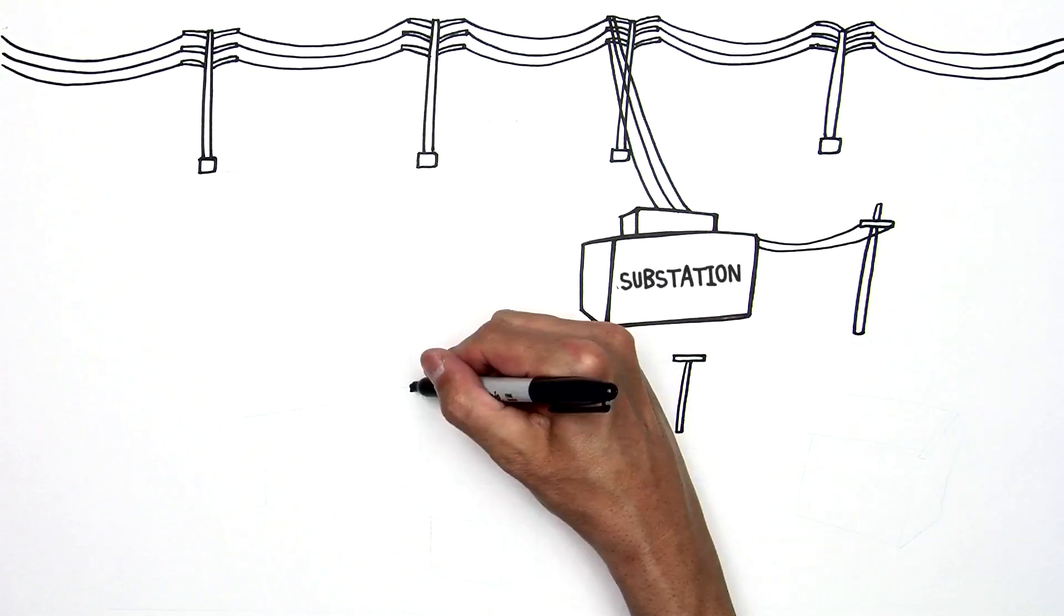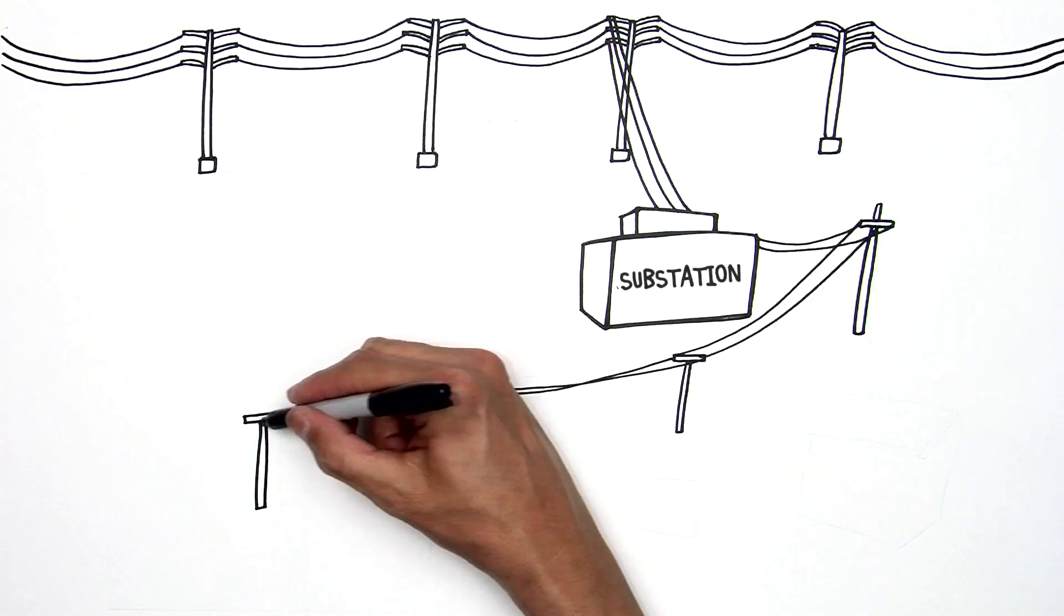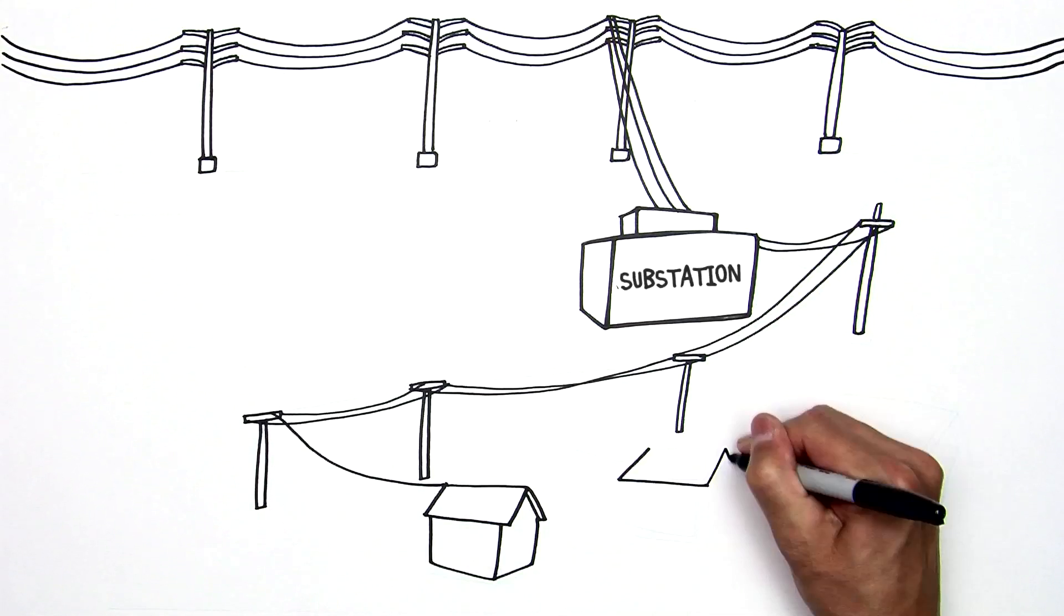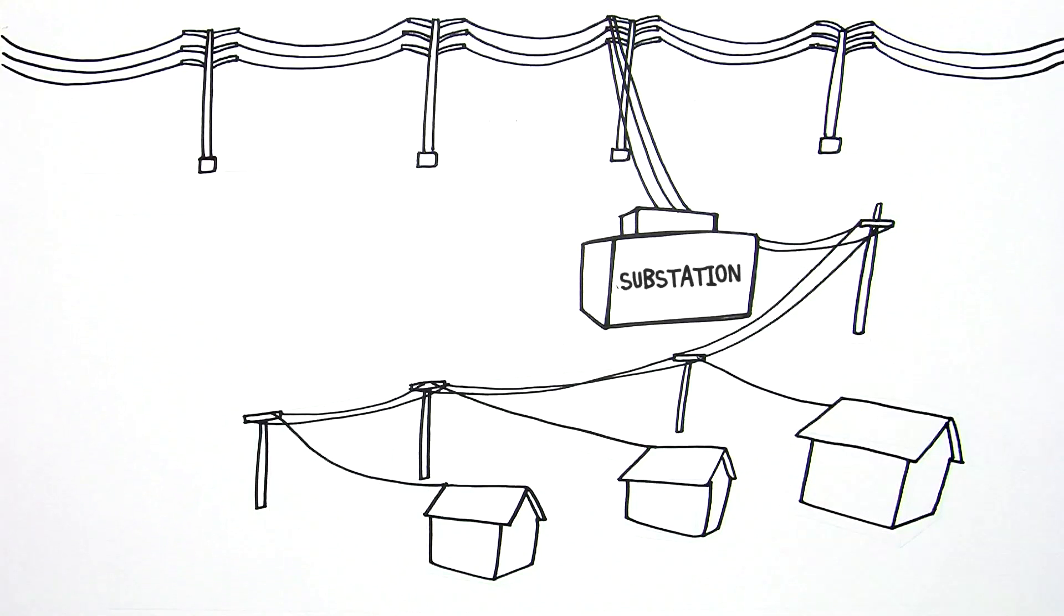Substations act as off-ramps. Electric voltage is reduced and shipped out on a distribution network acting like a system of city streets and local roads.